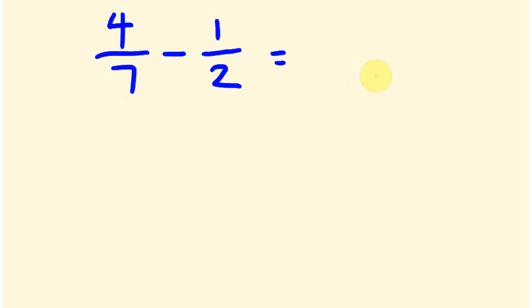So seven twos, fourteen. Big line. So that was those ones. Four twos are eight. One seven is seven. Eight take away seven is one. We have one fourteenth as our answer.